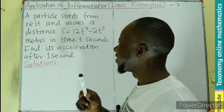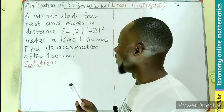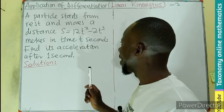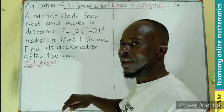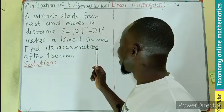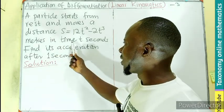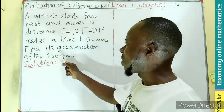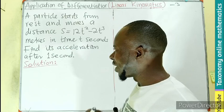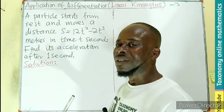So a particle starts from rest and moves a distance s which is equal to 12t squared minus 2t cubed in meters in time t seconds. We have to find its acceleration after 1 second.